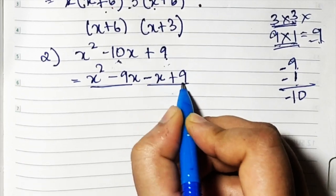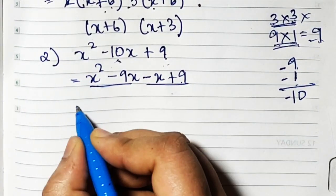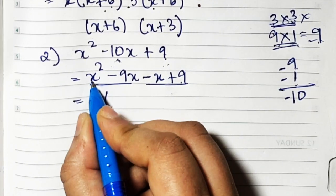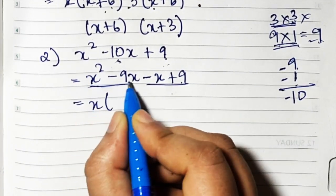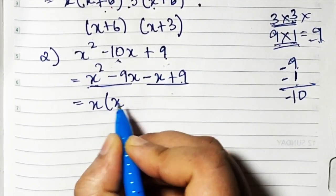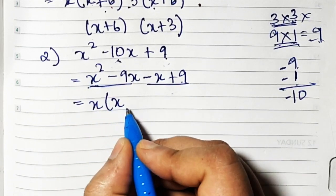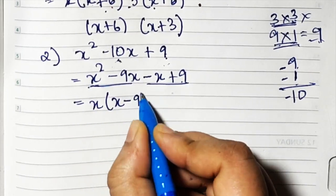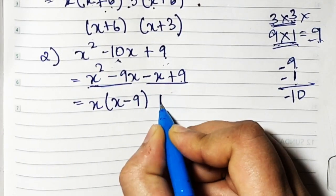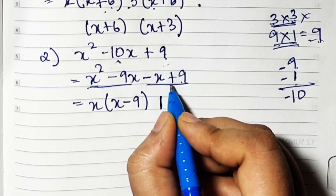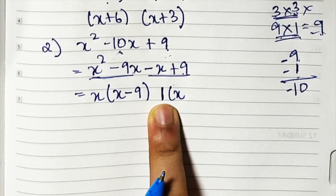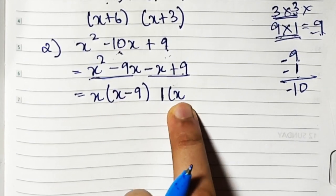Now take two numbers in a group. Here, take x common. X is common between these two terms. So x remains inside — one x has gone out, the other x remains inside — minus 9. From here, there's nothing common so I'll take 1 out. Here what happens: we have x minus 9. We need x minus 9 here also, so I'll write x minus 9.